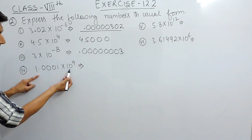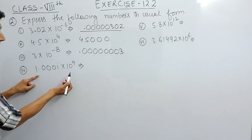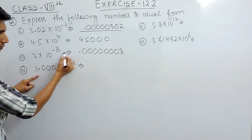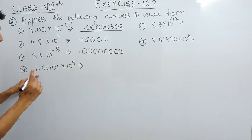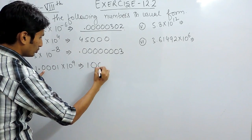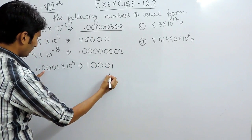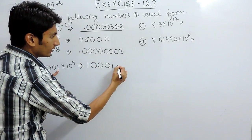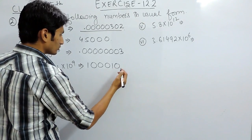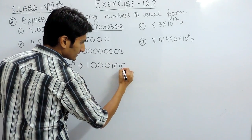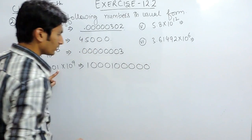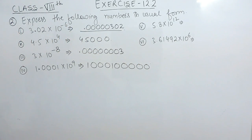Now this number has to be converted into usual form. The power is plus 9, so you have to shift the decimal to the right-hand side till 9 digits. Counting: 1, 2, 3, 4 — and we can add zeros as needed — 5, 6, 7, 8, 9. So this should be the answer.